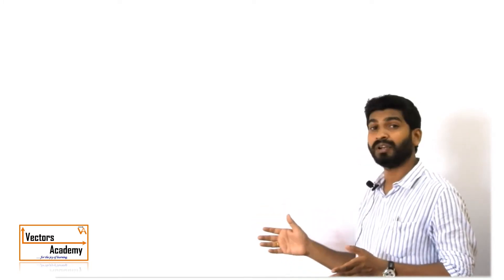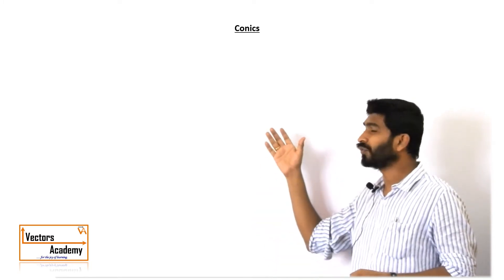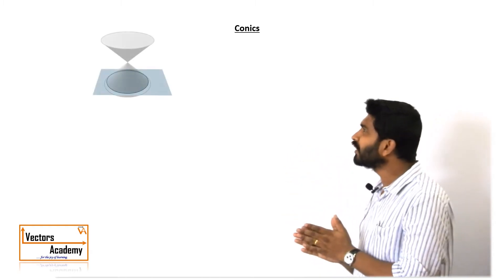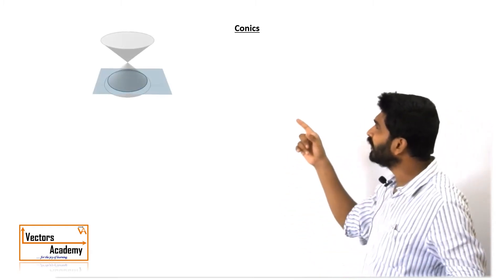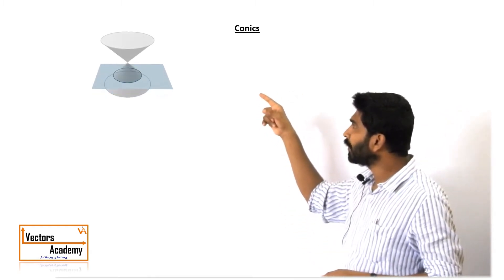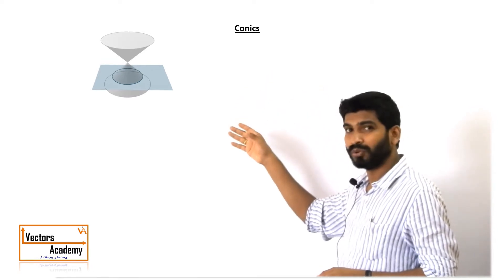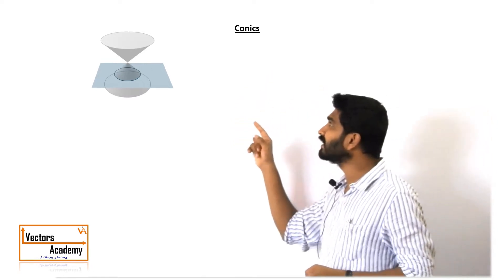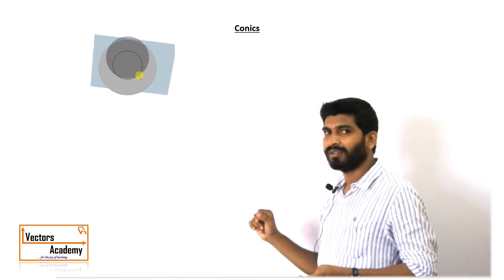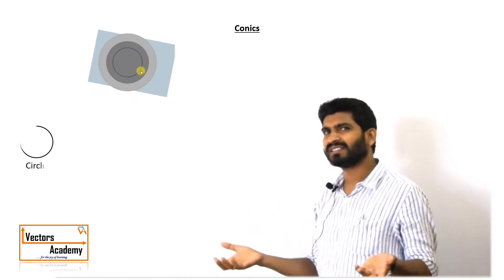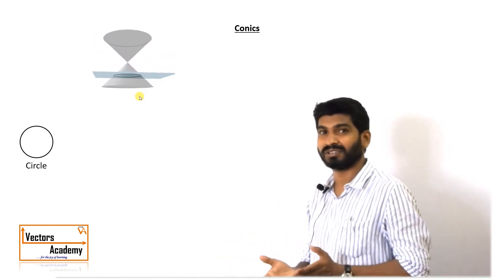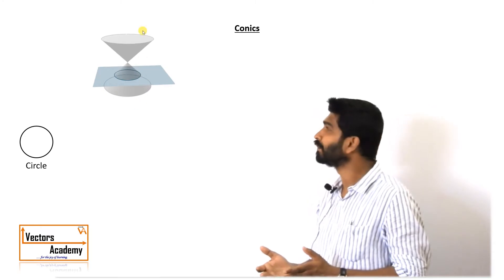Today we will be studying about cones and different two-dimensional shapes which can be formed out of a cone. If we consider a cone and cut it through a plane which is perpendicular to the axis of the cone, the shape we get is a circle. We have already studied the different forms of a circle and different equations of a circle.